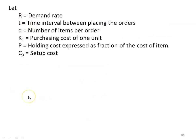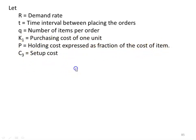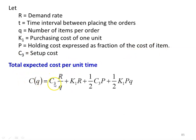We have different terminology connected with the model. R is the demand rate, T is the time interval between placing orders, Q is the number of items per order, K1 is the purchasing cost of one unit, P is the holding cost expressed as a fraction of the total cost of the item, and C3 is the setup cost. The total expected cost is: C3 × (R/Q) + K1×R + (1/2)×C3×P + (1/2)×K1×P×Q, where P is the holding cost and Q is the quantity.